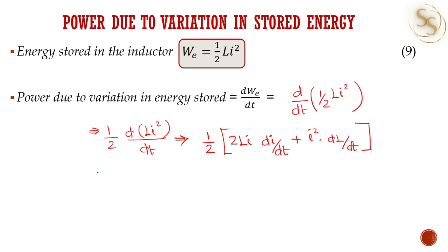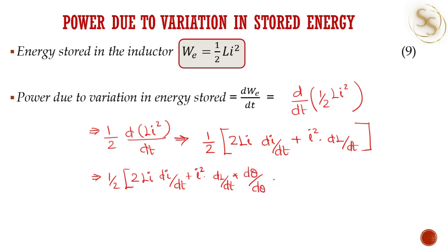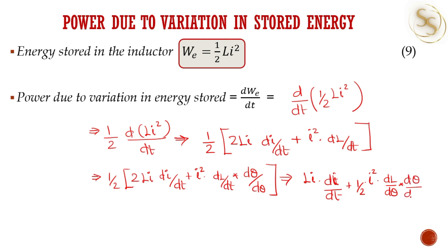Here also we multiply and divide the second term of this equation by dθ. We get ½ times [2LI times dI/dt plus I² times dL/dt times dθ/dθ]. This can be further written as LI times dI/dt plus I² times (dL/dθ) times (dθ/dt), where dθ/dt equals omega.